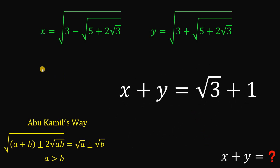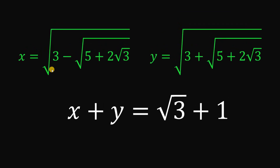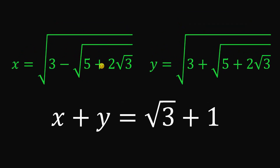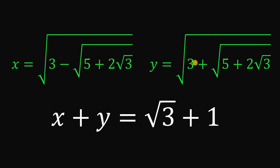Therefore, given that x is square root of 3 minus square root of pi plus 2 times square root of 3, and y equals square root of 3 plus square root of pi plus 2 times square root of 3, the numerical value of x plus y is simply equivalent to square root of 3 plus 1. And as always, we are done.